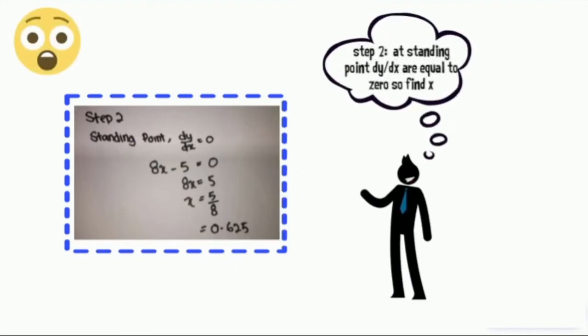Step 1: Differentiate the y equation. Solution. Given y equals 4x squared minus 5x minus 6, dy over dx equals 8x minus 5.